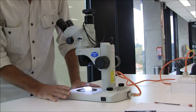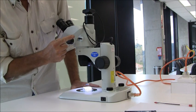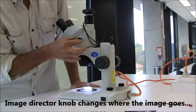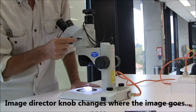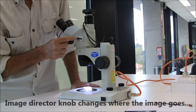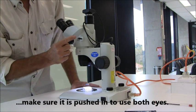The next thing in setting this up is to make sure this little knob is pushed in. It's pulled out to send the image to the camera and computer, but if you want to use both eyes, that knob has to be pushed in.